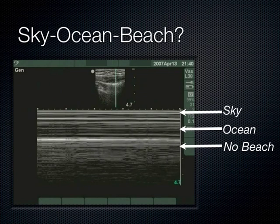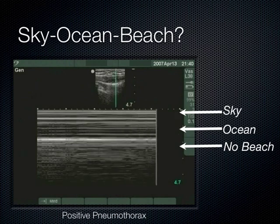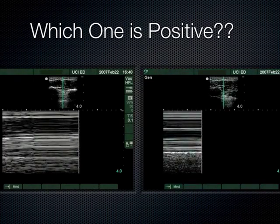Here's another example: a film with multiple A lines, and when you put M-mode through it, it definitely looks like a barcode. The other image shows the beach — the graininess due to lung motion. Once you understand what you're looking for and can find that image, identifying pneumothorax is not a problem.